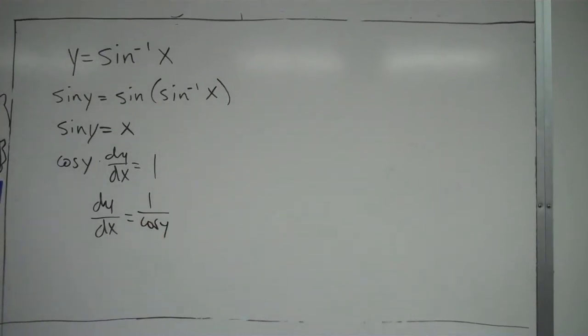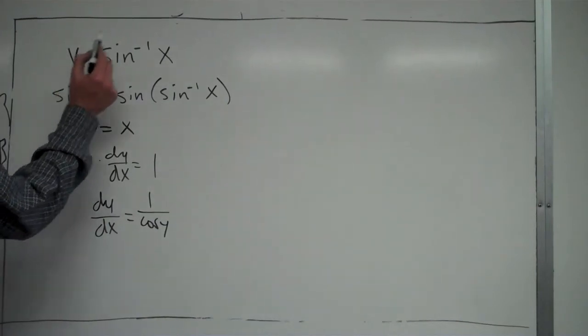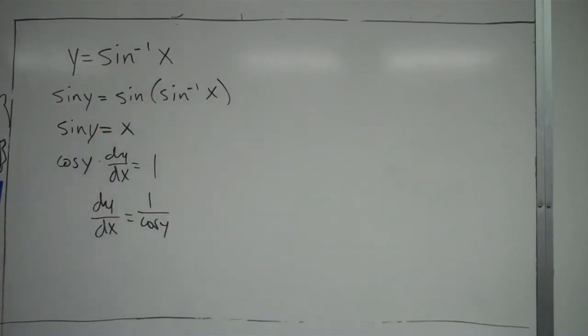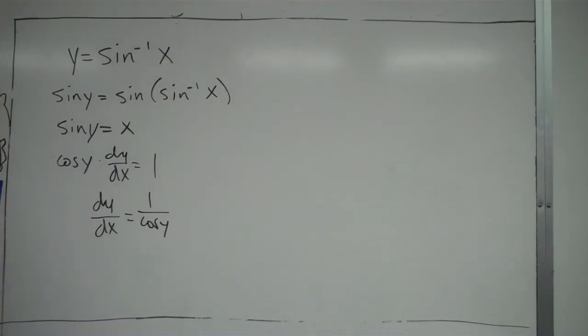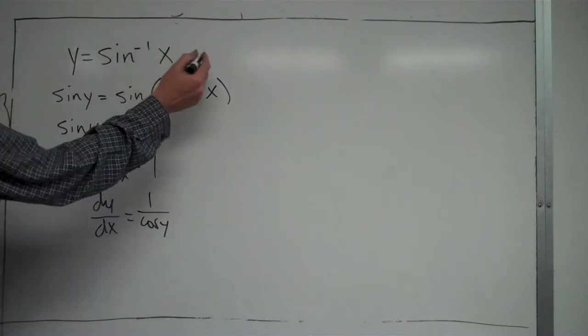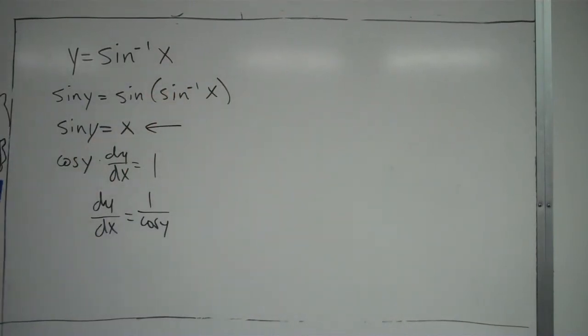Which looks pretty good. Looks like I'm done here. But the problem is, I started with a function y equals something in terms of x, I want to end in terms of x as well. So I need to figure out what does cosine of y equal. So what I'm going to do is go back to this equation right here. I'm going to set up a triangle based off of that, because this relationship right here, sine of y equals x, describes a certain triangle, a right triangle.